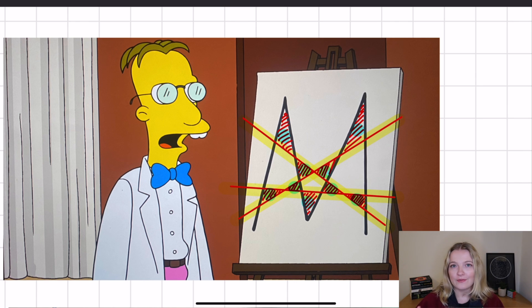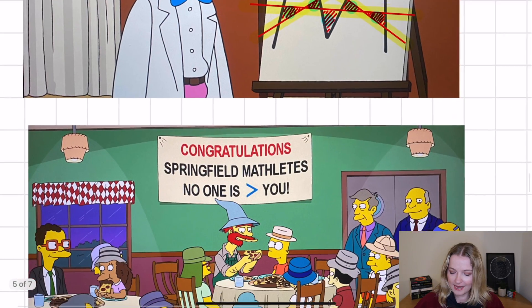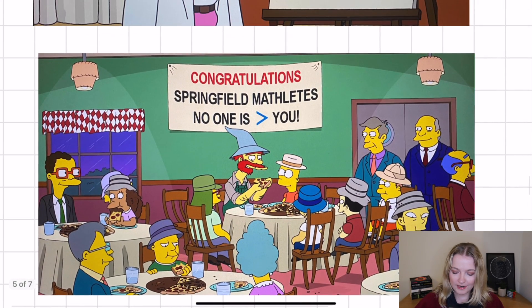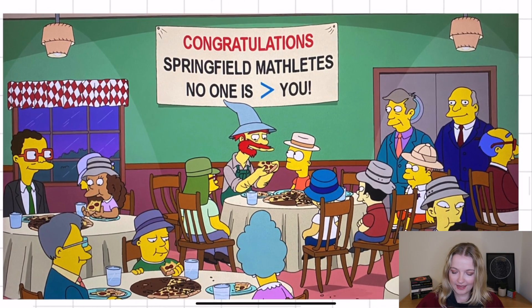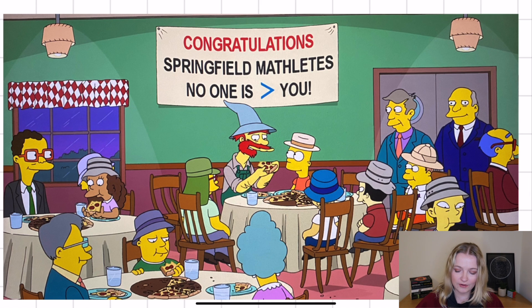But the very final piece of maths that we see in the Simpsons is when the Mathletes win the competition. And it's just the banner at the end here that says congratulations Springfield Mathletes, no one is, and then a greater than sign, you. So it's saying no one is greater than you, which I thought was a really nice way to end the episode.